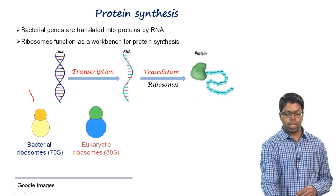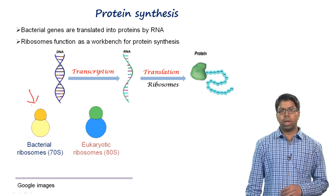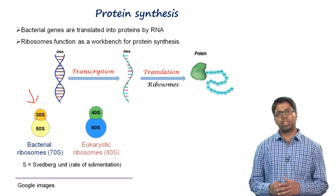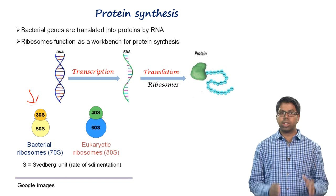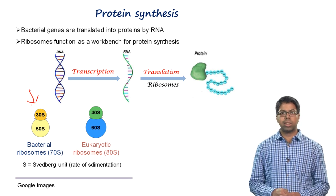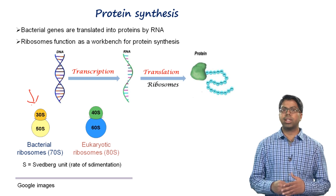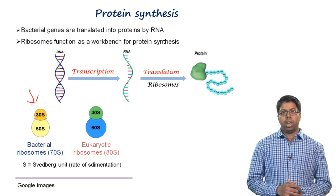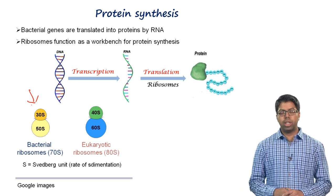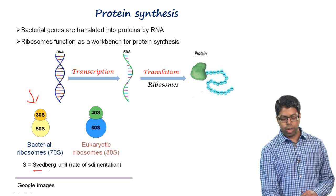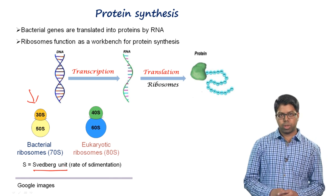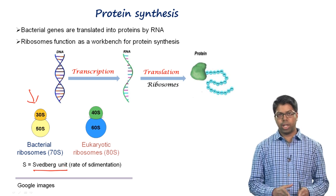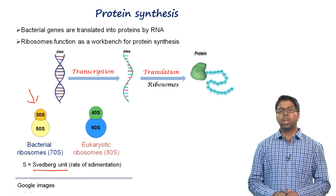The bacterial 70S ribosome is composed of two subunits: a smaller 30S subunit, where mRNA feeds in, and a larger 50S subunit that carries out catalytic functions. The S stands for Svedberg unit — sedimentation rates are not additive like molecular weights, which is why 30 plus 50 equals 70, not 80.